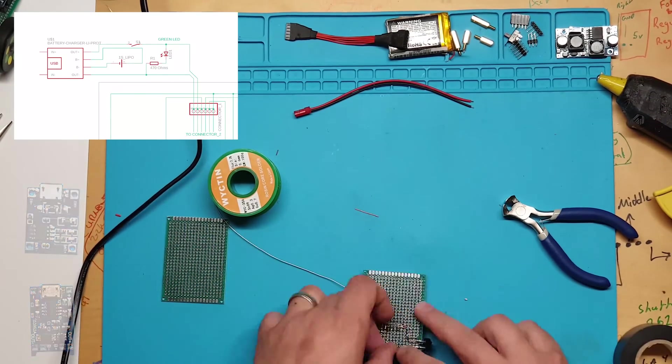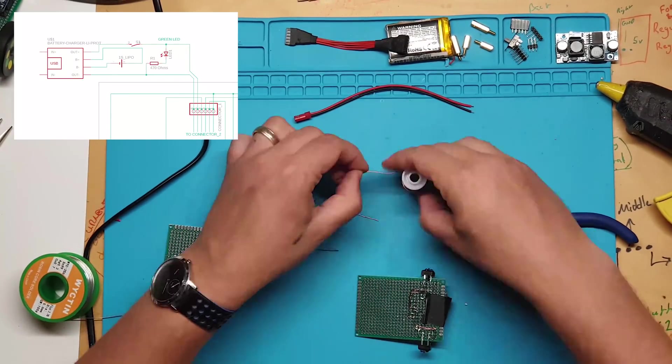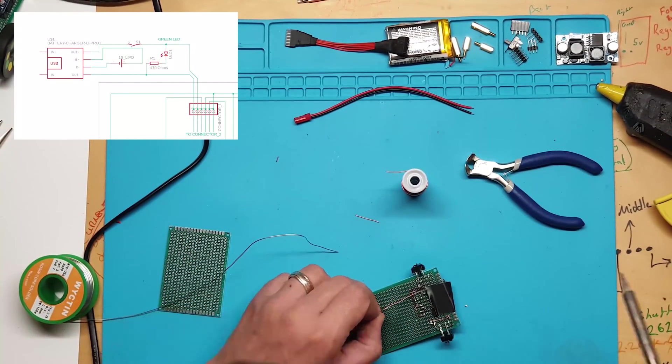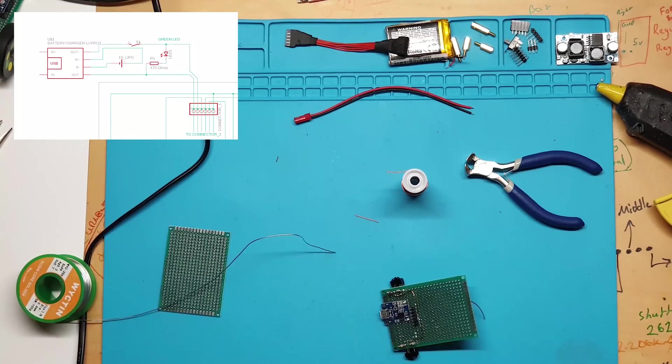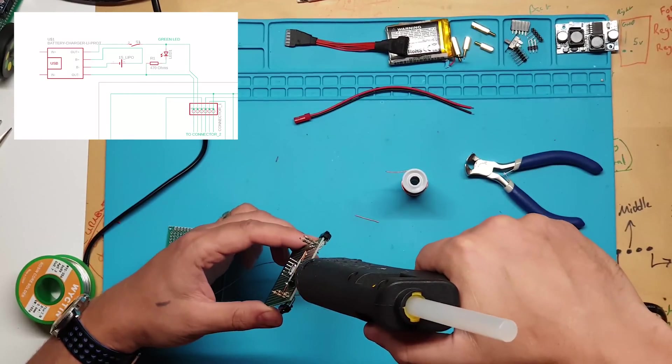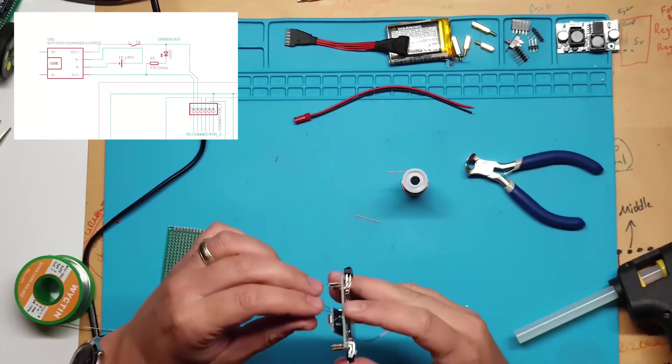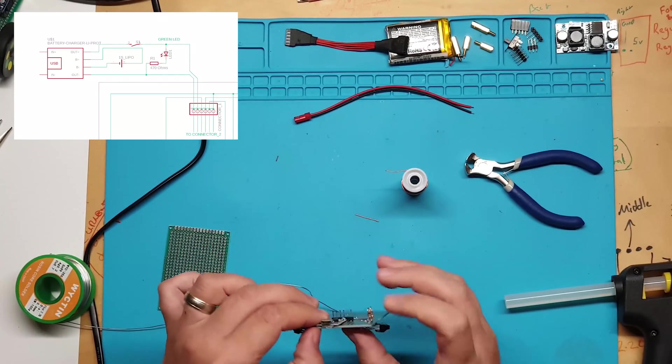I will solder wire to the output of the battery charging module and solder it to the perf board. Once this is done I will secure it in place with hot glue. This module will get hot and by soldering it to the perf board we will stop it from moving or coming off.